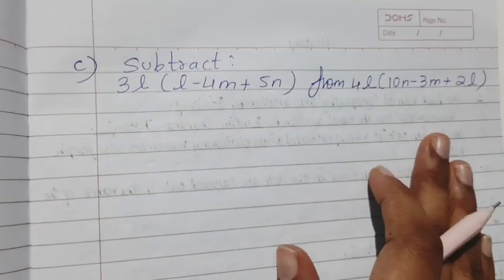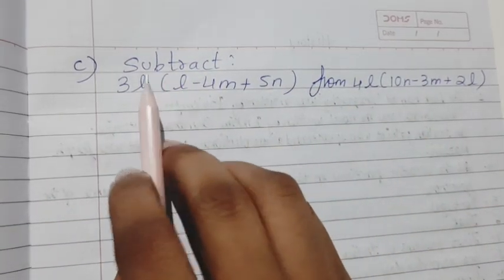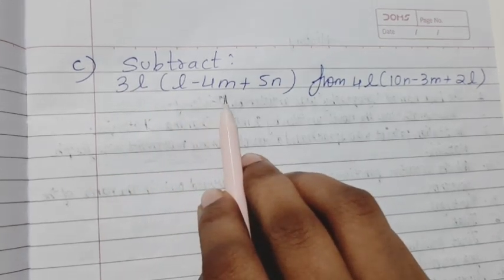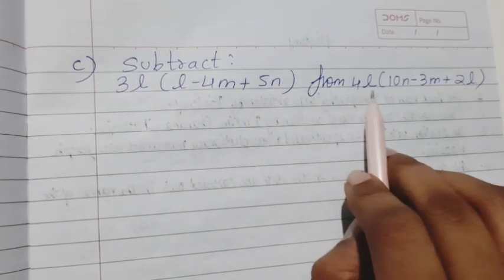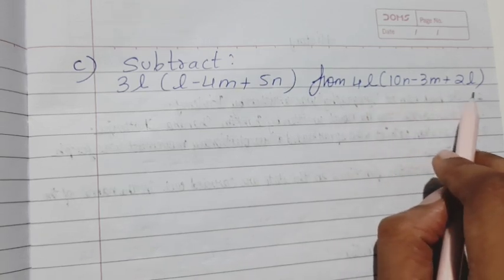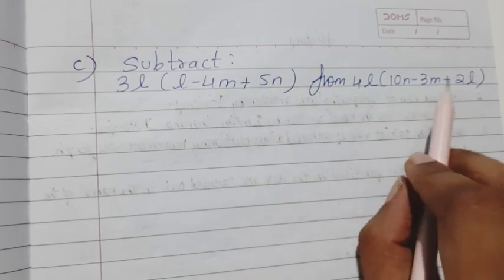I hope you all can see this clearly. Okay, so take down the question: subtract 3l(l - 4m + 5n) from 4l(10n - 3m + 2l). You all can take down this question.